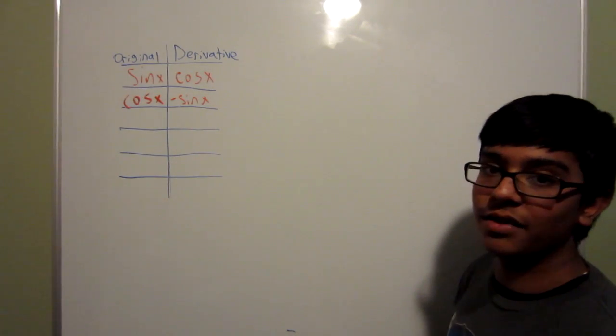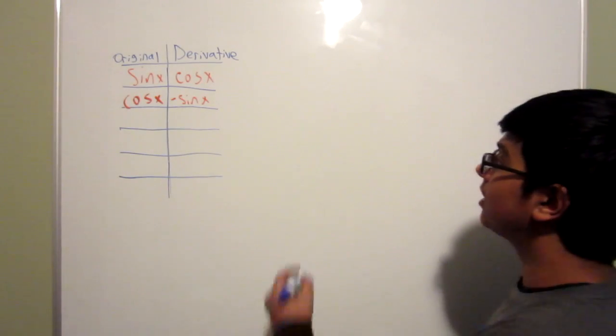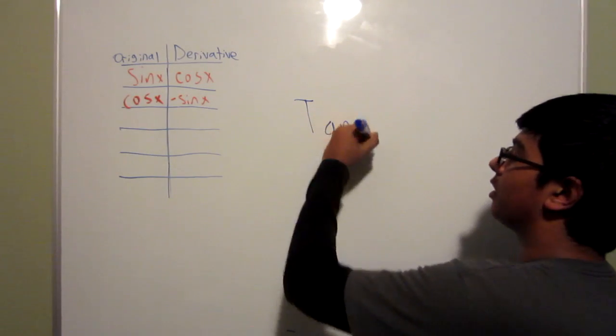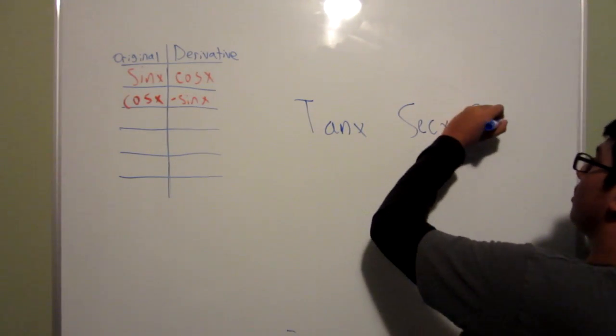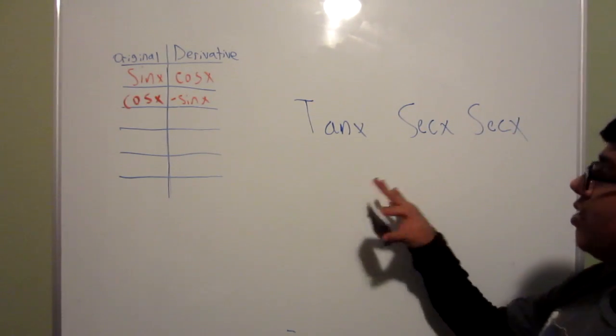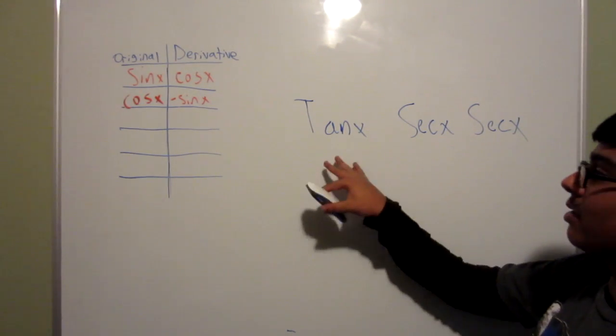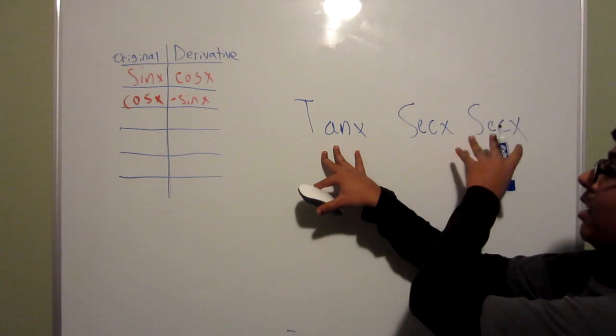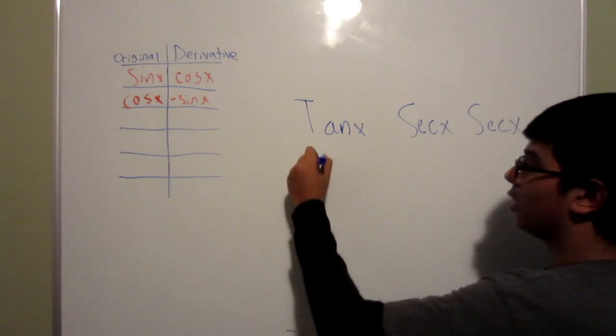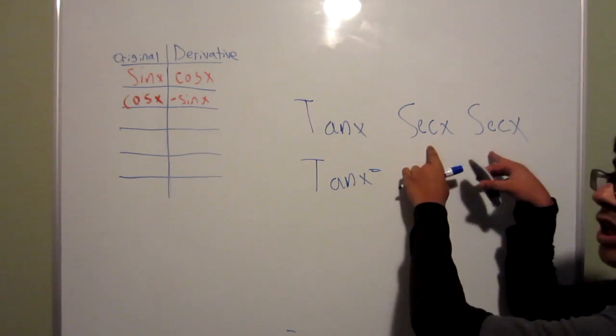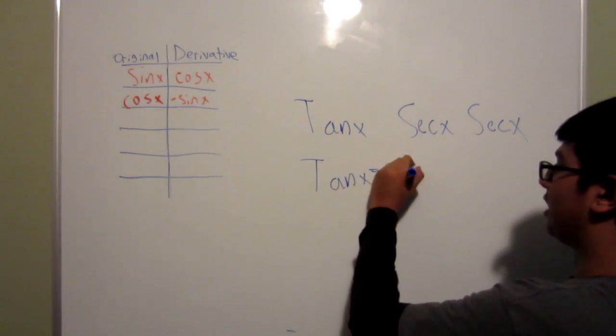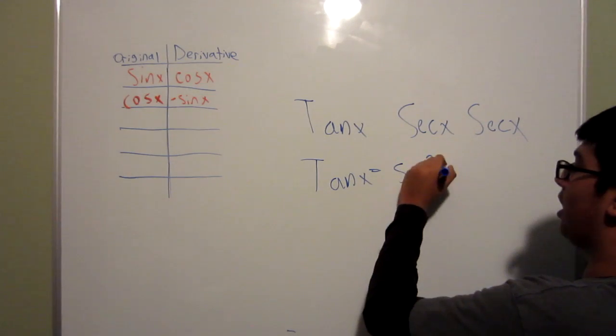Another trig function derivative shortcut is with tangent and secant. You have one tangent in the group, and you have two secants in the group. The way to always remember this is that whenever you take the derivative of one of these, you just multiply by the other two. So if you have the tangent to start off with, your answer is always multiplying the two that are left. So you get secant squared x.